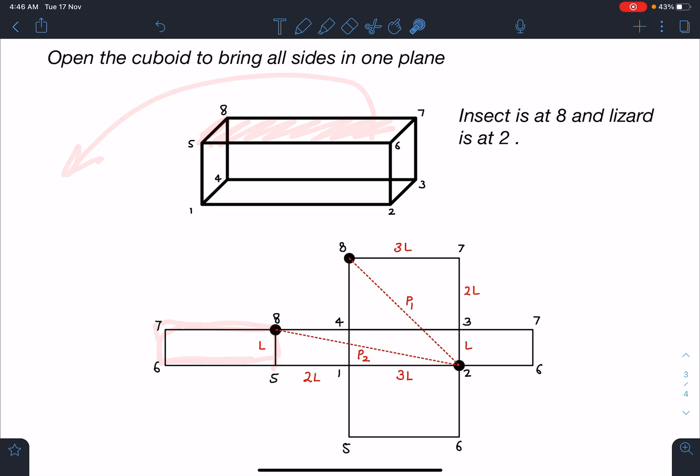Now if you see carefully, point 2 where this lizard was placed is this point here. When we try to close this, point 8 where this insect was placed will be here. So in the plane, there are two paths directly from 2 to 8. One is path 1 and one is path 2. I'm calling this as path 1 and this path is path 2.